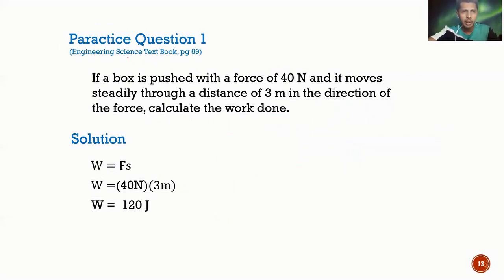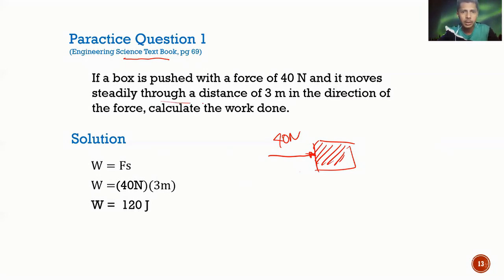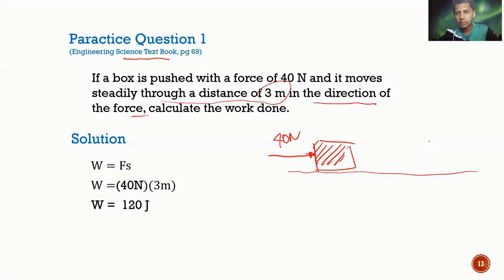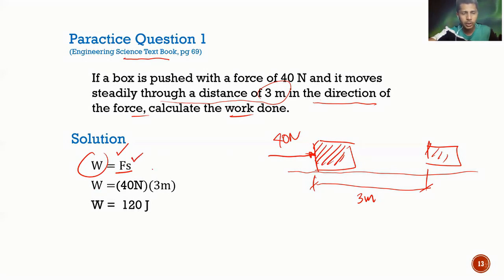Practice question 1: a box is pushed with a force of 40 N on an inclined or horizontal plane, and it moves steadily through a distance of 3 meters in the direction of the force. Calculate the work done. Formula: W = Fs. So W = 40 × 3 = 120 Joules.